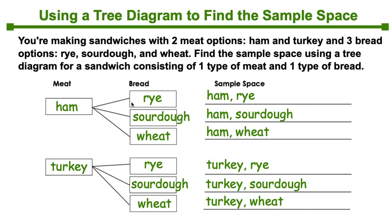So ham can go with rye, ham can go with sourdough, or ham can go with wheat. And those are the three ham sandwiches. And we do the same thing with turkey down below. So again, this is all the same question, just presenting the sample space in three different ways.